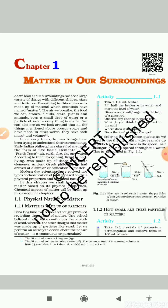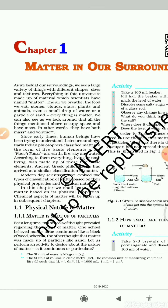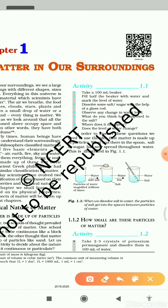First of all I would like to explain the meaning of 'matter in our surroundings.' Matter means anything that can occupy space and which has mass. Surrounding means the nearby areas — the areas around us — and that is what we are studying about in this chapter.